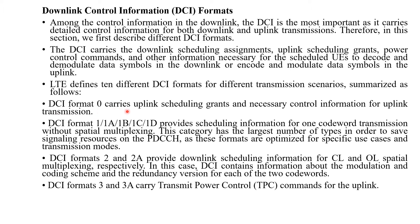DCI format 0 carries uplink scheduling grants and necessary control information for uplink transmission. DCI formats 1A, 1B, 1C, and 1D provide scheduling information for one transport block transmission without spatial multiplexing; this category has the largest number of formats to save signaling resources on the PDCCH. DCI formats 2 and 2A provide downlink scheduling information for closed loop and open loop spatial multiplexing respectively; DCI format 2 contains modulation and coding scheme and redundancy version for each of the two codewords. DCI formats 3 and 3A carry transmit power control (TPC) commands for uplink.